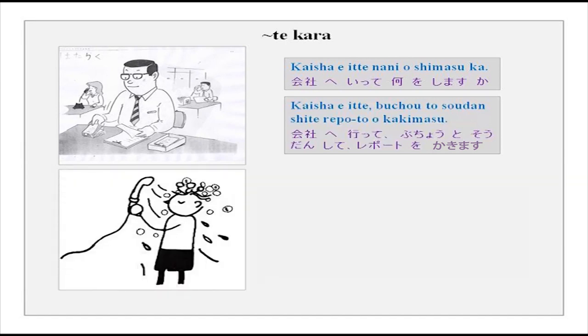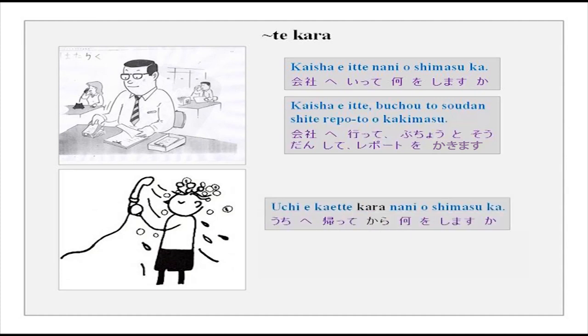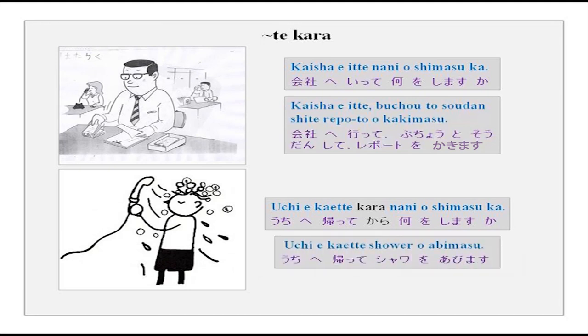Kaisha e itte nani wo shimasu ka? — What will you do once you reach office? Kaisha e itte, bucho to soodan shite, report wo kakimasu — I will consult my boss and then write a report. It is all happening later. Another example: uchi e kaette kara nani wo shimasu ka? — Uchi e kaette shawa wo abimasu — once I reach home, I will take a shower. With kara, you make clear the jumban — the serial order — of activities one after the other.